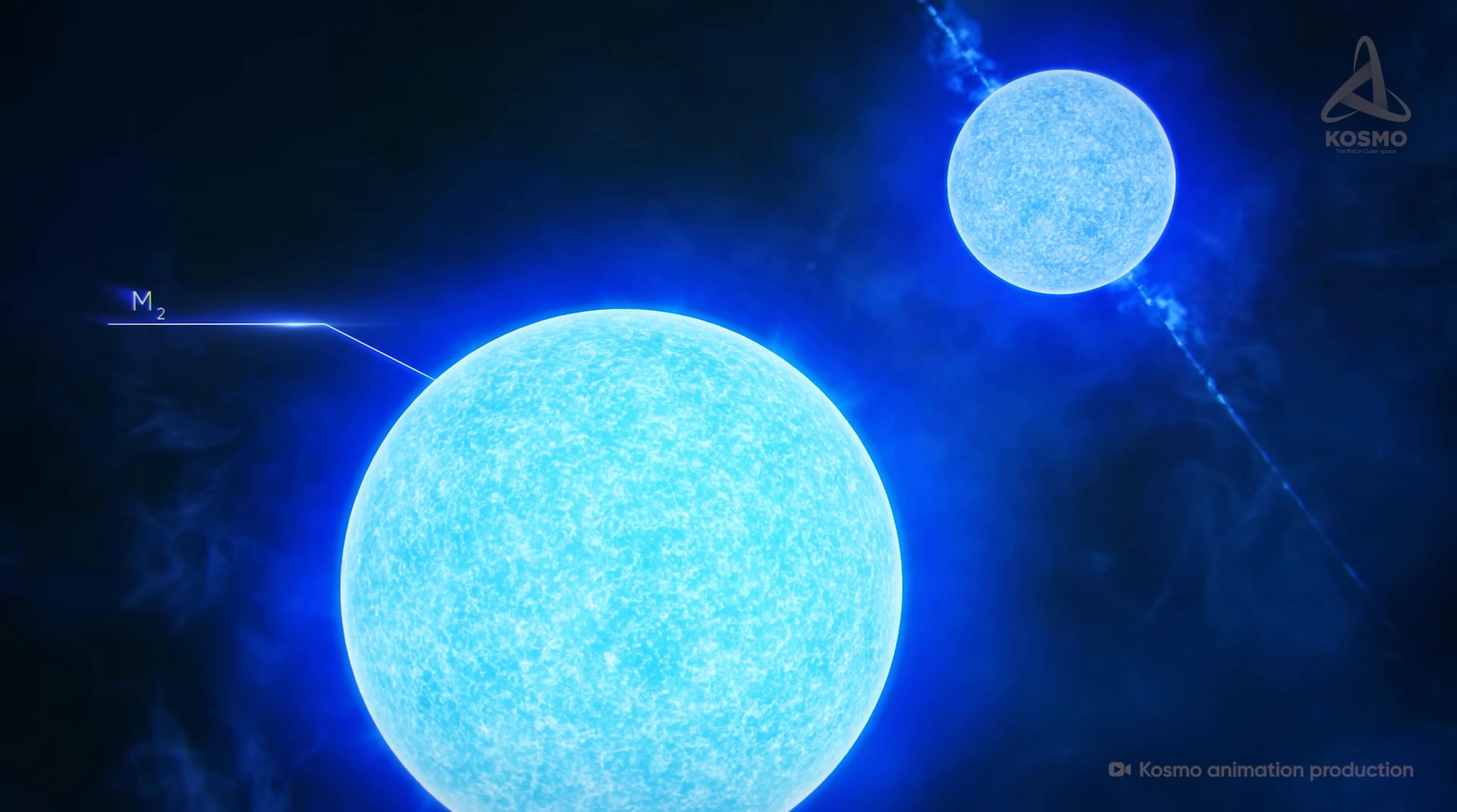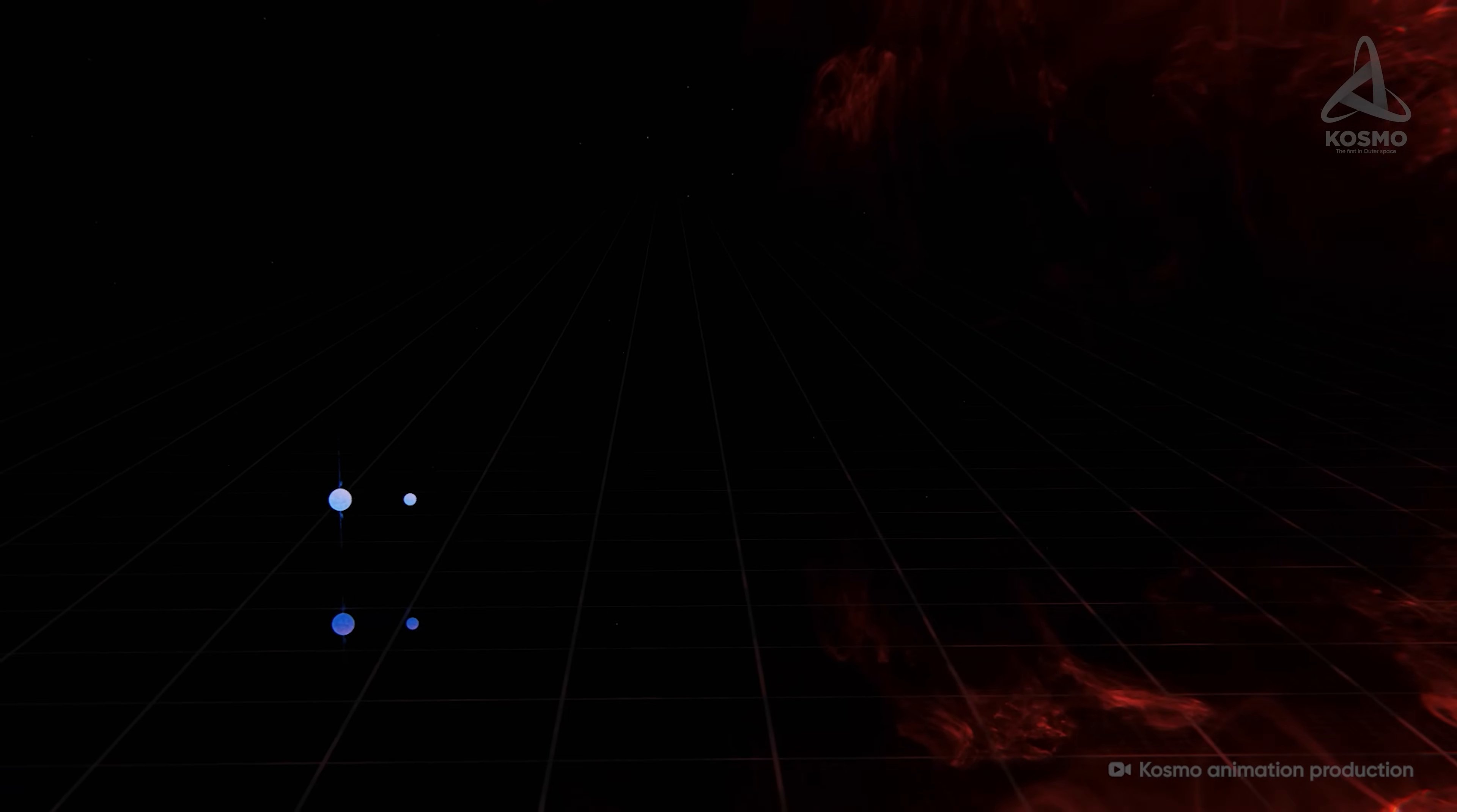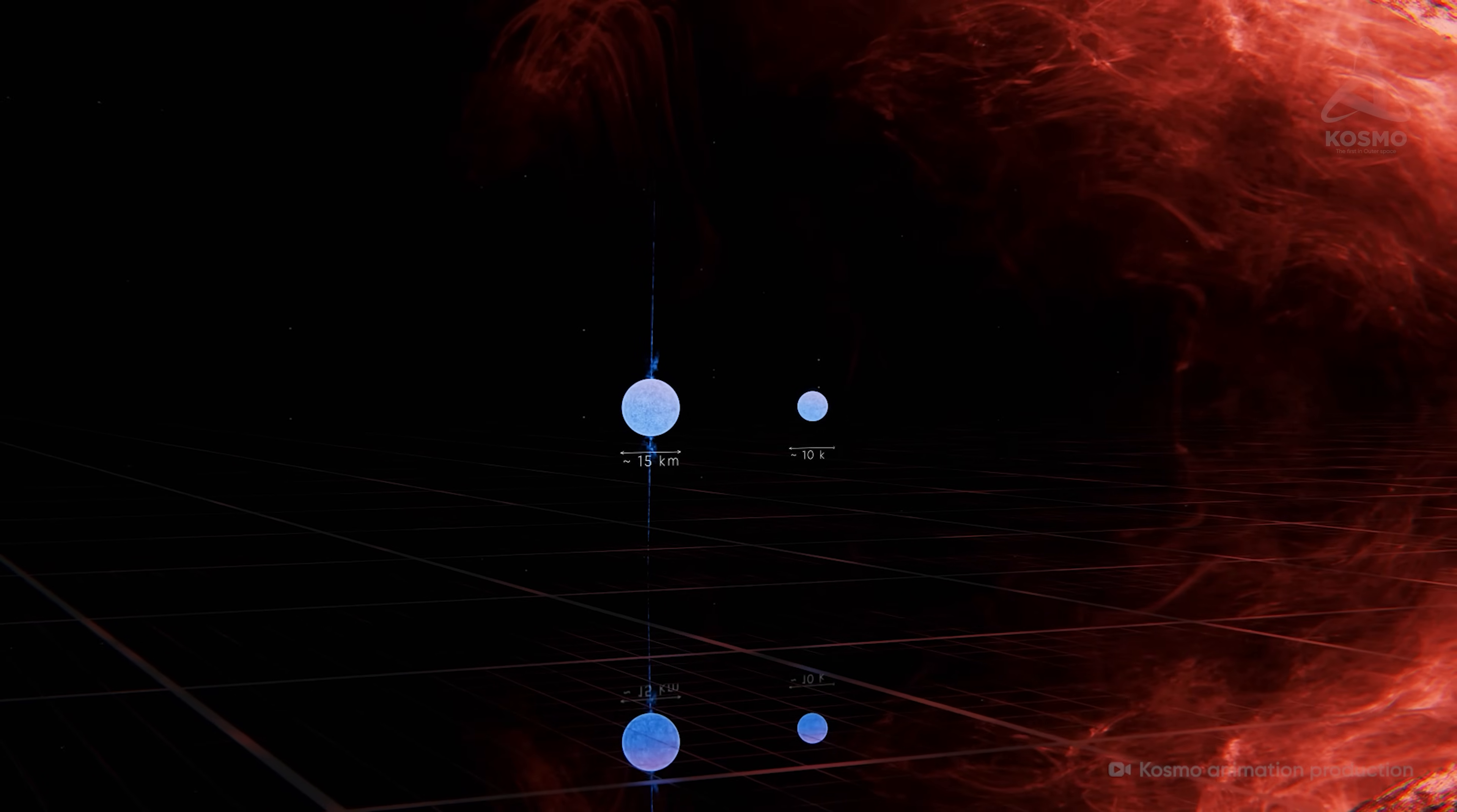Its mass is 1.25 of that of the Sun and the rotation period is 2.77 seconds. If we want to take a closer look at these objects, we will see that their size is extremely small by space standards. Either component of the system is no more than a couple of dozen kilometers in diameter.